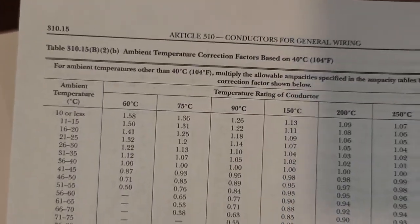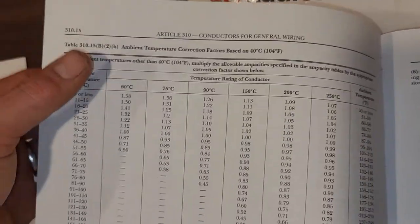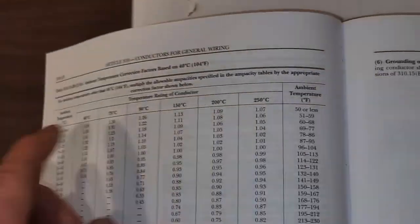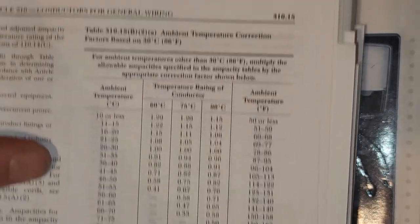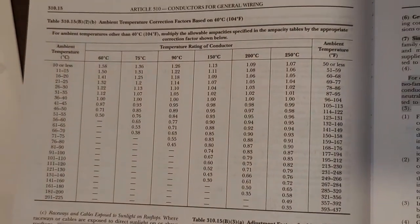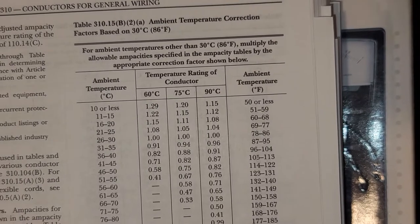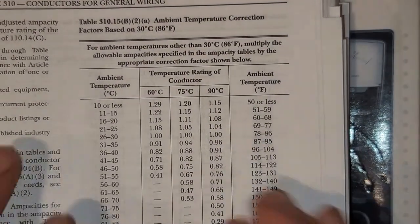The reason we have to use this table and not that other one — if you read that one it's a much larger table — is that the other one is based off of 40 degrees C. If we flip over to our primary ampacity table, we see that it's based off of 86 degrees. So we want to come back and use the table based off of 86 degrees. In my 'how to highlight your code book' video, I teach you to take the other table and cross it out completely, because you'll never use it in the field or on testing.